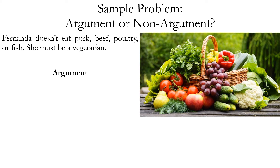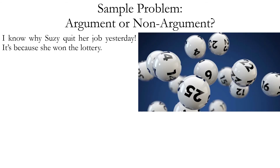This is not a valid argument — it's possible for the conclusion to be false even if the premise is true. But it's still trying to make an inferential claim, still trying to prove the second sentence based on the first, so that's why it counts as an argument. Another sample problem: I know why Susie quit her job yesterday — it's because she won the lottery. Is this an argument or not? The answer is no. This is an explanation. It's giving a reason why Susie quit her job, not giving proof that she did.